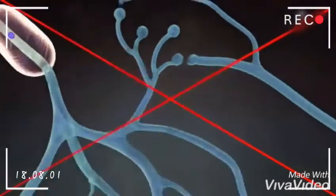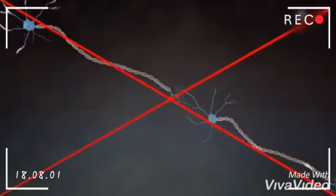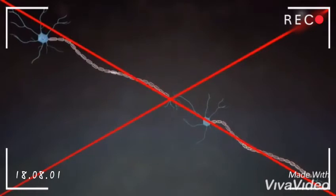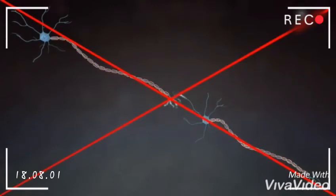Thus, the information is received by the dendrites and is then sent out through the axon to the neighboring cell. This is how the information is transmitted from one cell to another.